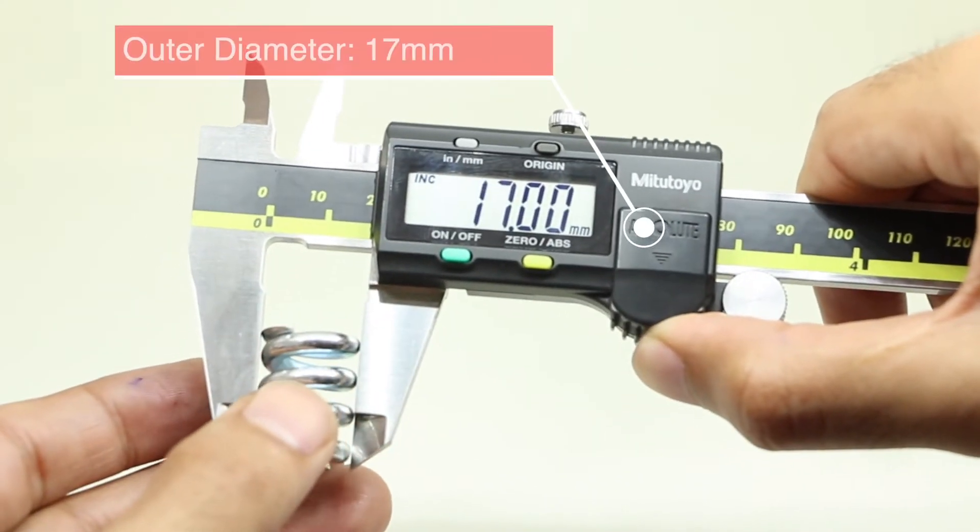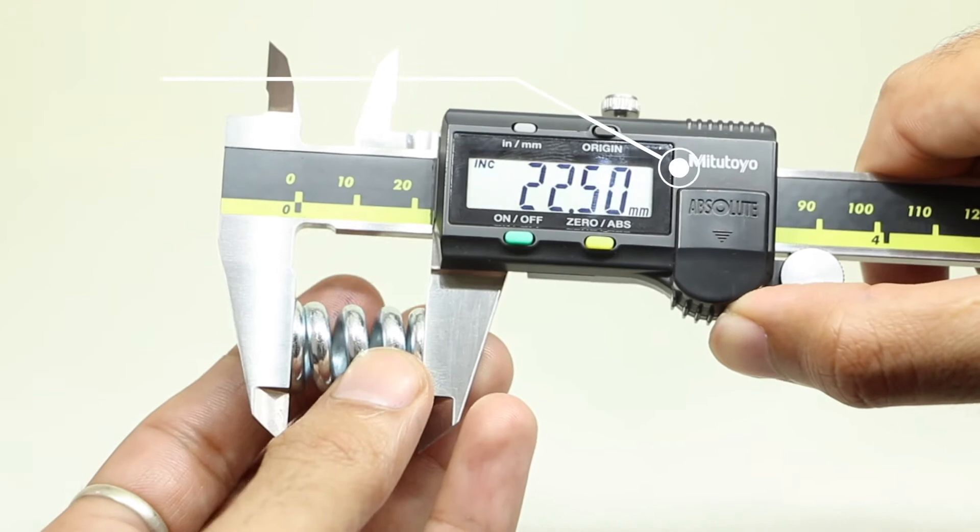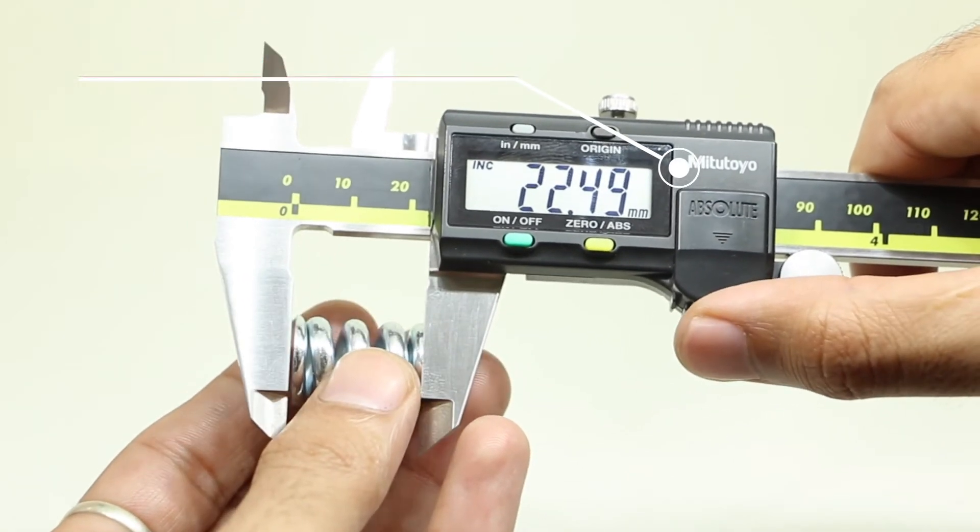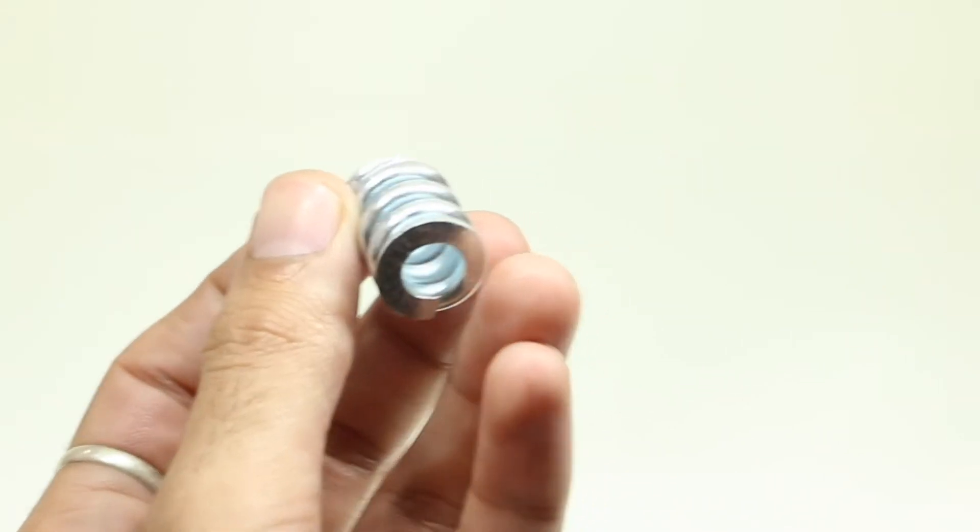Next is medium sized compression spring. Outer diameter of this spring is 17 mm. Free length is 22.49 mm. This is a right hand side spring.